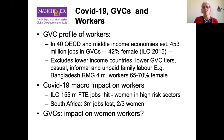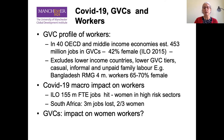In terms of data and information on numbers of workers in global value chains, it's not very good. We know that in 40 OECD countries there are over 450 million jobs in global value chains, 42% of those female. But importantly, that excludes lower-income countries, lower value chain tiers, casual, informal, and unpaid family labour. As an example, Bangladesh is not included, yet 4 million jobs are in Bangladesh's ready-made garments sector, and 65 to 70% of those are female.